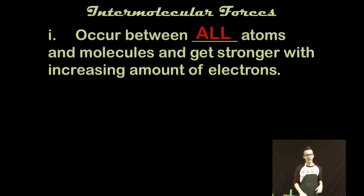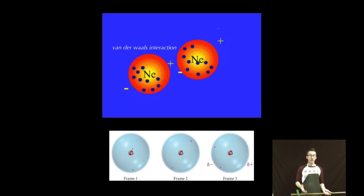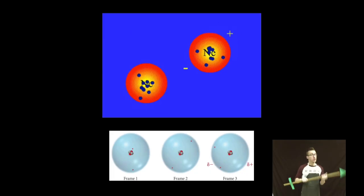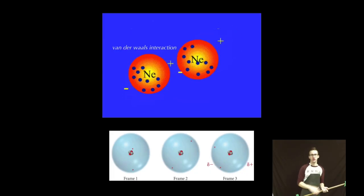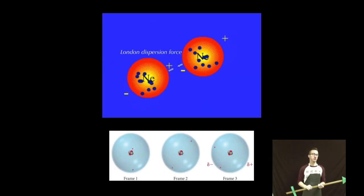Now because all atoms have electrons all atoms and molecules will experience London dispersion forces. And the London dispersion forces get stronger with increasing amount of electrons. In other words the more electrons you have to throw around the larger the dipole will be. Think Coulomb's law. More negative charges all on one side are going to create a more attractive dipole.